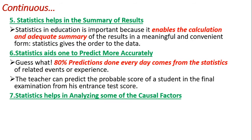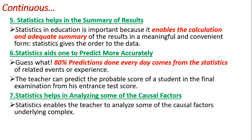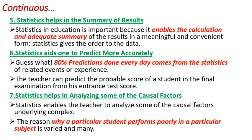Lastly, statistics helps in analyzing some of the casual factors. The teacher can analyze casual factors underlying complex situations — why a particular student performs poorly in a particular subject in many cases. Some students are very weak in one subject but very good in another. We have to identify the strength and weakness of the student. Then only can we help them improve or change the teacher's technique of teaching. We can analyze the common casual factors — why some are very poor, some are average, and why they cannot improve further.